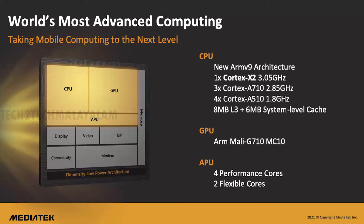It is now on top — this is the A16 Bionic level with 4NM. This is the world's first 4NM chipset with 1 Prime Core, 3 Performance Cores, and 4 Efficiency Cores — an Octa Core setup. The Prime Core runs at 3.05 GHz, which is Cortex-X2, the world's first Cortex-X2 clocked at 3 GHz. Cortex-X2 delivers 35% more performance and 37% more power efficiency versus ARM.